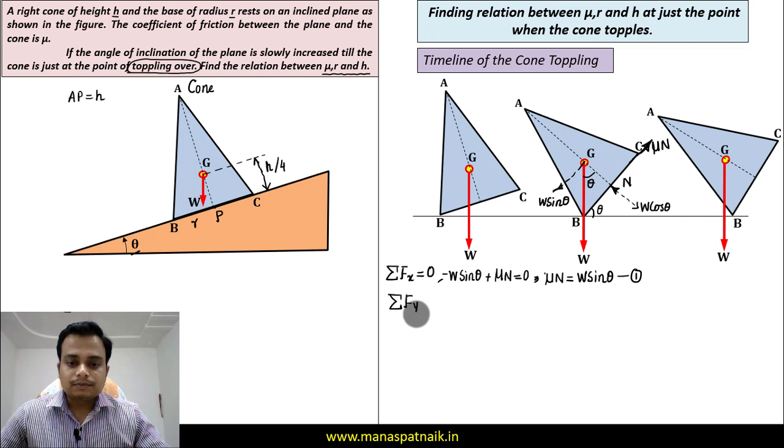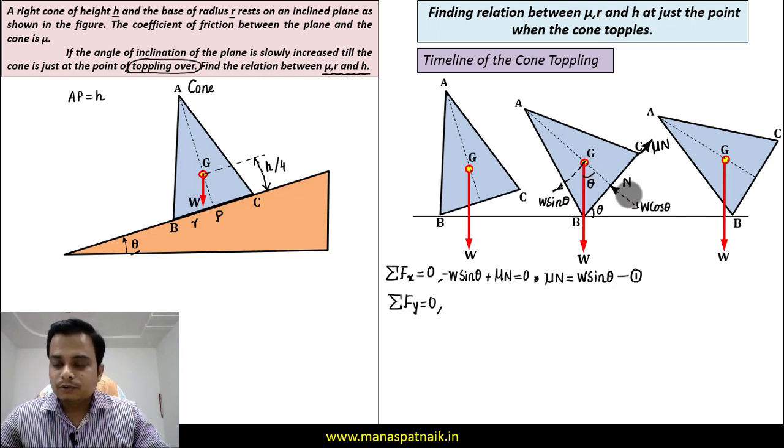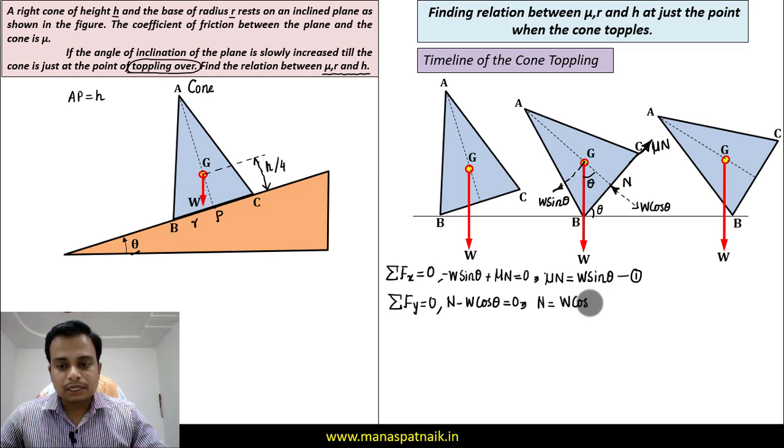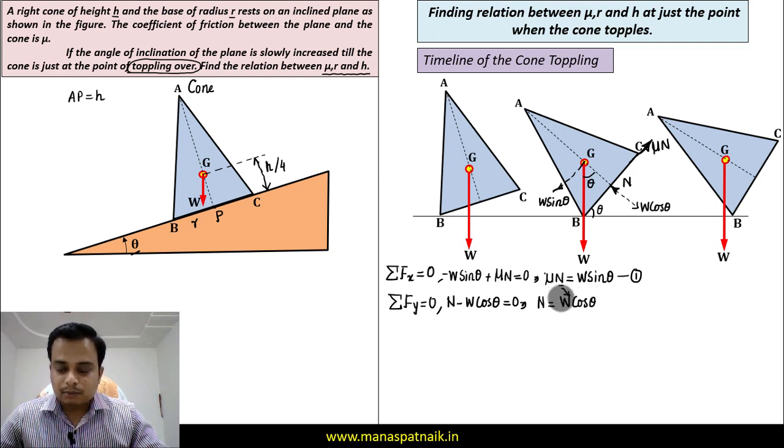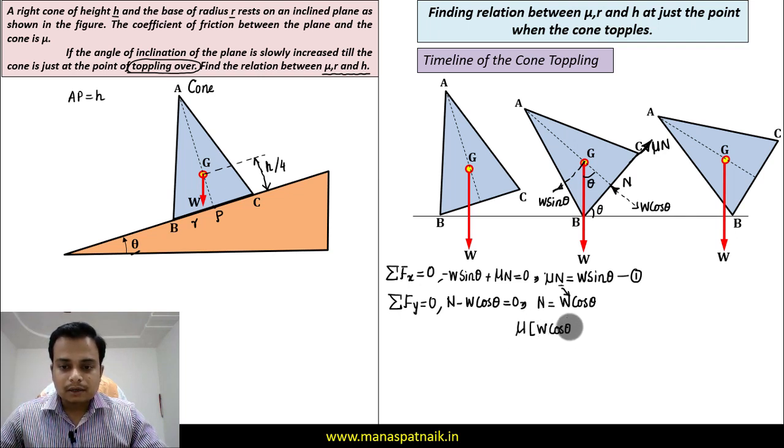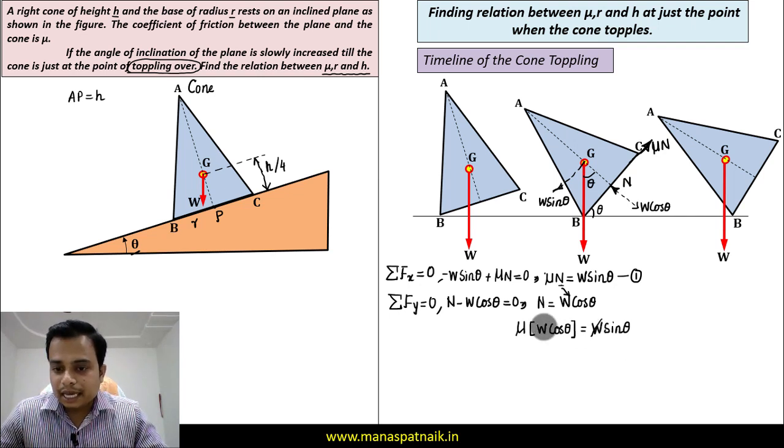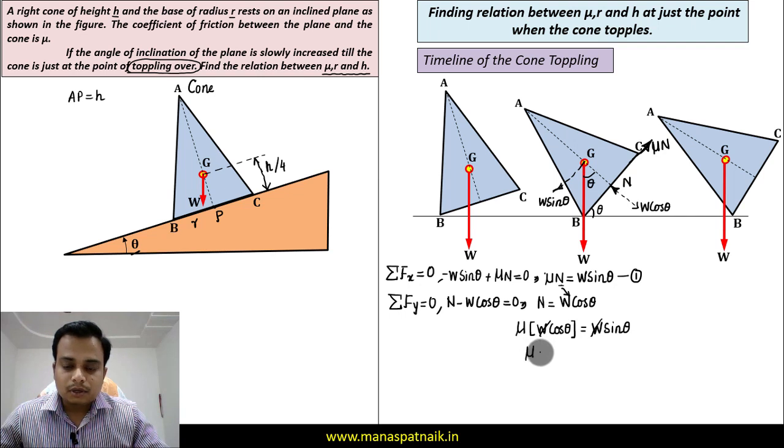The second equation that we are going to frame is summation of all the forces along y is equal to zero. We've got N and we've got W cos theta, one upwards and one downwards, so N minus W cos theta = 0, implies that N = W cos theta. So in place of this N, what you can write is W cos theta. Let's see what happens. μ times W cos theta = W sin theta. You just need to solve this. Cos theta will come over here, W and W will cancel out, and the stuff that remains is μ = tan theta.